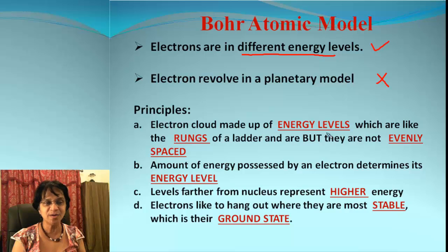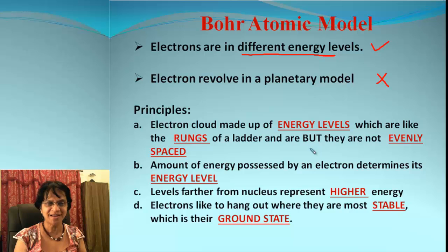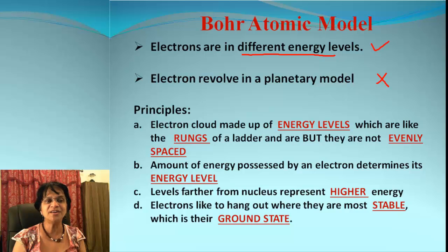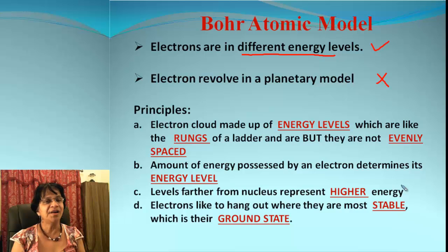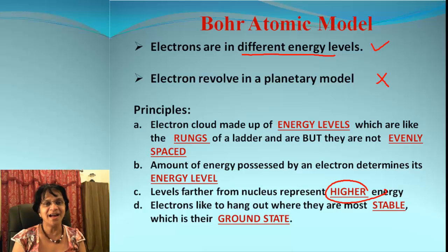Here is a summary of the principles. The electron cloud is made up of energy levels which are like the rungs of a ladder — steps of a ladder — and they are not evenly spaced. The amount of energy possessed by an electron determines its energy level. As we go farther and farther from the nucleus, the energy gets higher and higher.